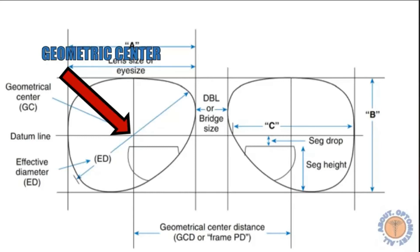Now you can calculate the geometric center also by adding the A size or the eye size and the distance between the lenses of the bridge size together. For example your A size was 52 millimeters and your bridge size is 18 millimeters. You add 52 to 18, that's 70 millimeters. That's your geometric center distance.